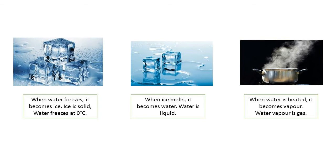Melting، cooling اور freezing کے ذریعے different materials کی state کو ہم change کر سکتے ہیں۔ بچو مثال کے طور پر اگر ہم water کو zero degree centigrade پر freeze یعنی جماتے ہیں تو وہ ice بن جاتا ہے۔